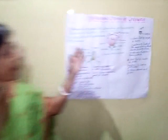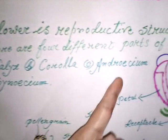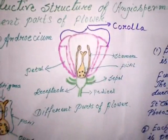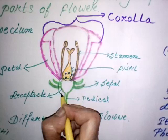There are mainly four different parts of flower. These are calyx, corolla, androecium and gynoecium. All these four parts are arranged on the base of the flower, and this base is known as receptacle.